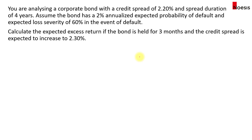So let's look at an example. You are analyzing a corporate bond with a credit spread of 2.2% or 220 basis points, and the spread duration is 4 years. Assume that the bond has a 2% annualized expected probability of default and an expected loss severity of 60% in the event of a default. Calculate the expected excess return if the bond is held for 3 months.